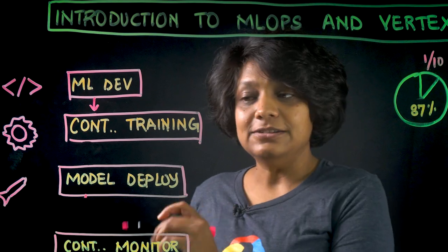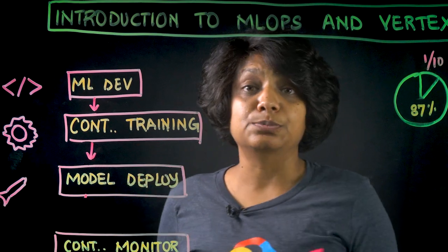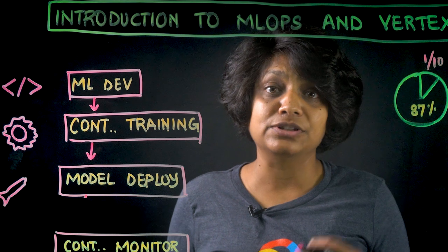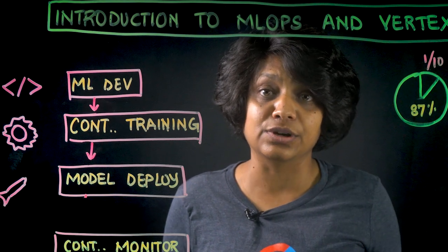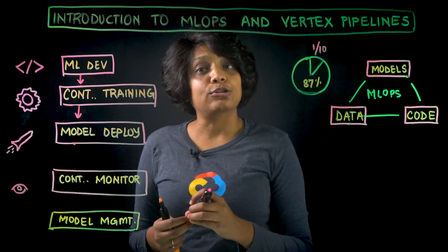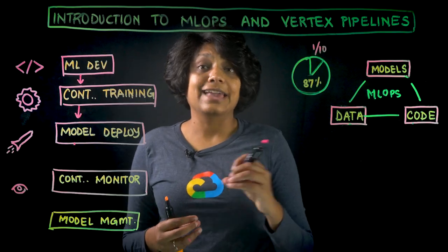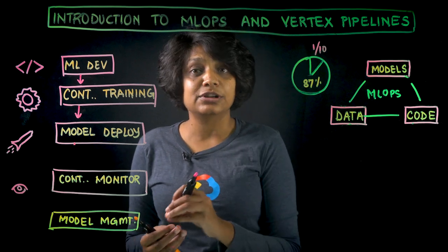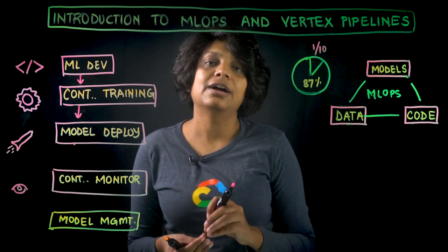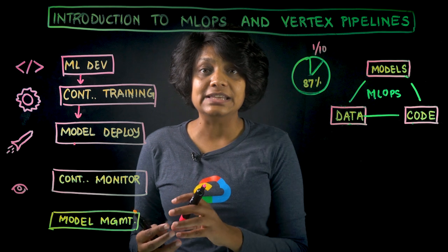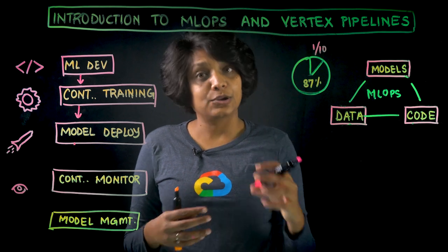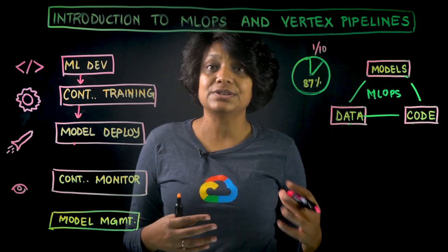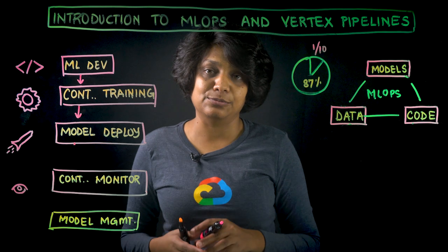The third step is model deployment, which is really all about continuous integration and continuous delivery. This involves running A-B tests, evaluation of model behavior in production, and then approving them for releasing following a rigorous, auditable, and even reversible CI/CD process.